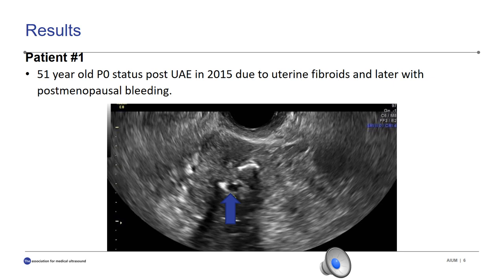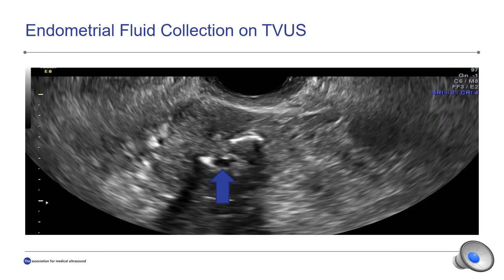Patient DC is a 51-year-old, P0, that presented for UAE in 2015 due to uterine fibroids. Since then, she has re-presented with multiple episodes of post- and perimenopausal bleeding. Ultrasound findings for this patient were significant for a small collection of fluid in the endometrium, as noted by the blue arrow in this image.